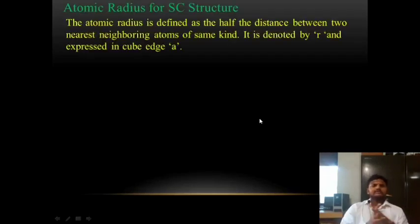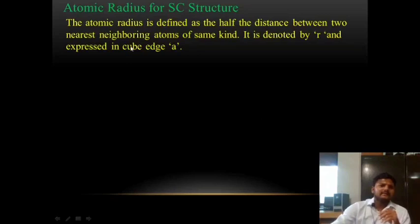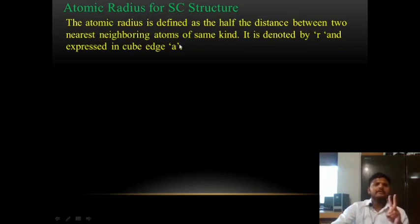Next is the atomic radius for a simple cubic structure — how to find the atomic radius. In a simple cubic structure, the atomic radius is defined as half the distance between two nearest neighboring atoms.